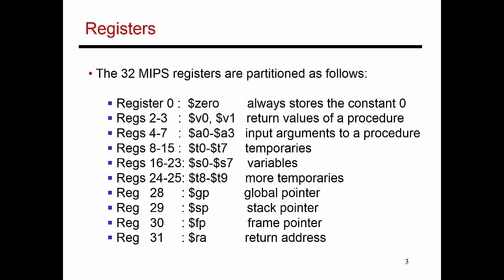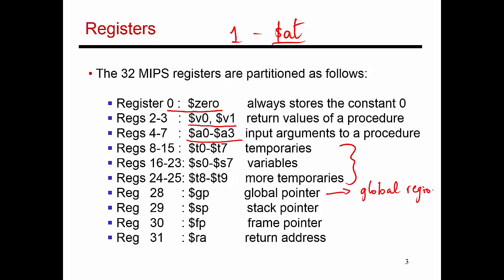Now that we've introduced all these registers, let's do a quick summary. There are 32 MIPS registers. Register 0 always has the value 0. Register 1 is a special register only accessible to the assembler — as a programmer writing assembly, you will never use register 1. Registers 2 and 3 are the return values. Registers 4 to 7 are the arguments to a procedure. Then there's the global pointer pointing to the global region — variables accessible to every procedure. Then the stack pointer and frame pointer tracking the start and end of a procedure's activation record, and the return address register helping you return from a procedure call.